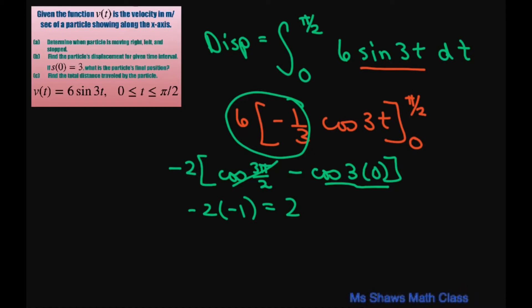If s of 0 is 3, what's the particle's final position? All you do is take your initial position of 3 and add the displacement of 2, so the final position equals 5.